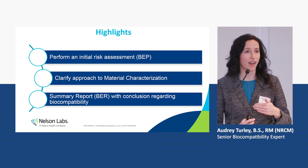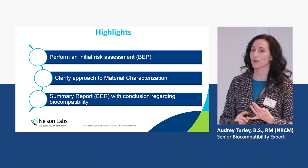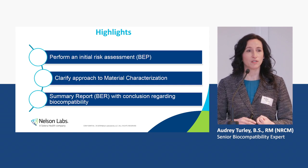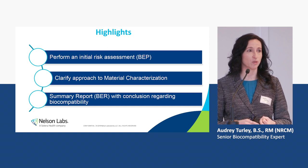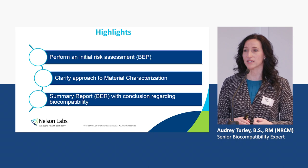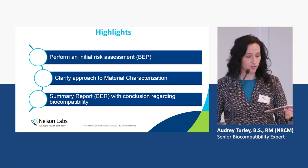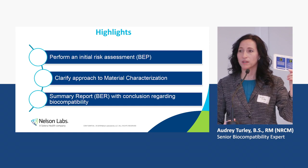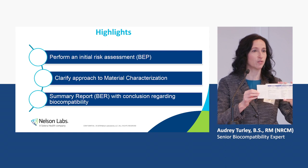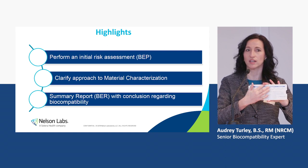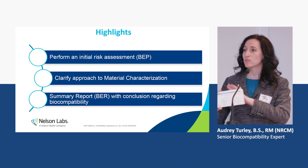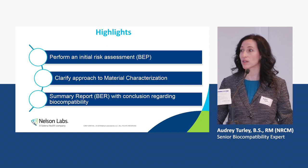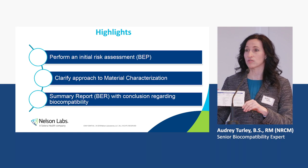To summarize the highlights: first, do a BEP — complete an initial risk assessment. Second, have a very well-documented approach to material characterization that supports your plan. Third, complete a summary report — the Biological Evaluation Report. We also have handouts at the back highlighting our approach to biocompatibility, and a slide rule to help you have a conversation about your device categorization and the expected endpoints to address. Please make sure you go home with one, and if you need extras for the rest of your team, talk to our sales team here in Europe.